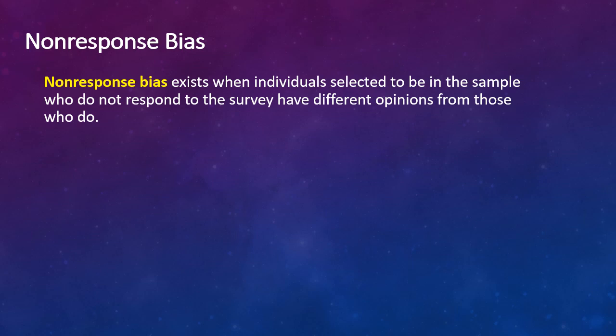Non-response bias is our next type of bias. This occurs when individuals selected to be in the sample just don't respond to the survey. And those absence of responses skew the survey because the people that didn't respond might have a different idea or answer.